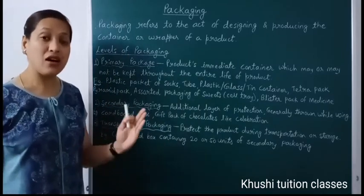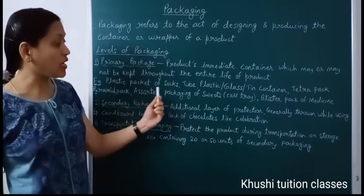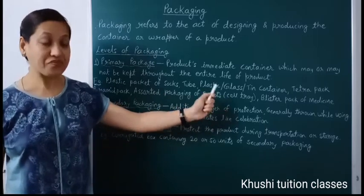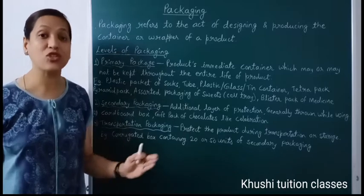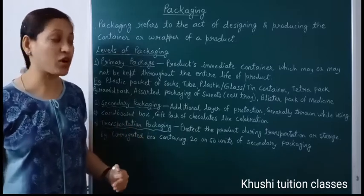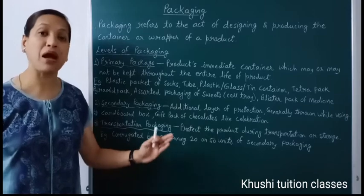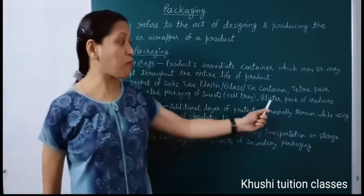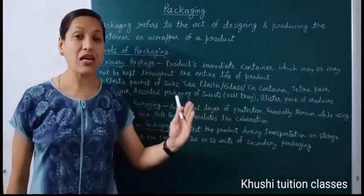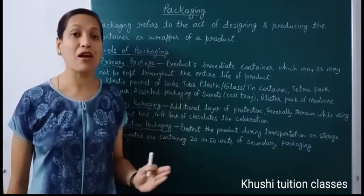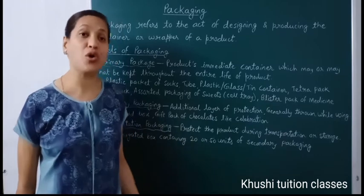Then pyramid pack — pyramid pack requires less space for storage, so this is also an innovation in packaging. Assorted packaging of sweets — जैसे एक sale tray होते हैं जिसमें लड्डू अलग-अलग रखे जाते हैं, या mixed sweets जो अलग-अलग differentiate होके रखे जाते हैं, that is assorted packaging in a cardboard box — that is the primary packaging of sweets. Blister pack of medicines — जैसे capsules या tablets एक-एक piece pack होती हैं और एक पूरे pack में 10 या 15 medicines होती हैं — that is also primary packaging.